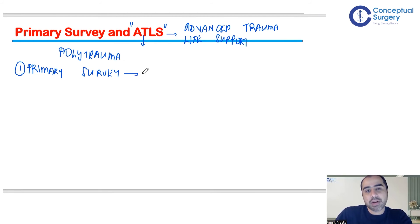In primary survey, your aim is to identify life-threatening injuries. You don't have to identify every problem, just what injuries are life-threatening. You have to manage and stabilize them. Once the person is stable, only after stability is achieved, you move to secondary survey.